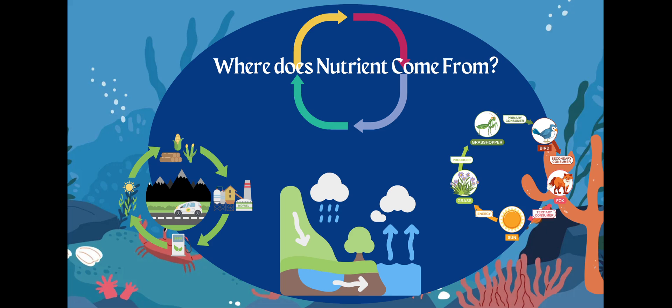A food web is made of all of the different food chains. Some nutrients are going to be soluble, meaning they can be broken down. There is a reservoir of these dissolved nutrients in the ocean, which is available for producers and consumers to use, whether through the food web or through upwelling from the bottom of the ocean up.